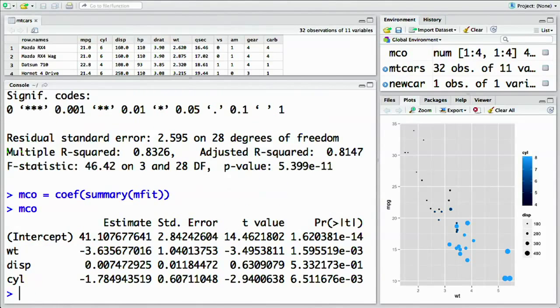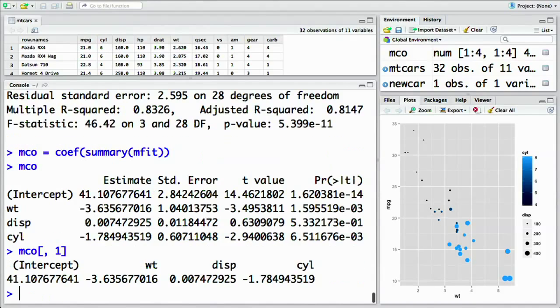Once again, we can extract each of the estimates by getting the first column of this. So mco bracket comma 1, first column. These are our four estimates: how much the marginal effect of increasing your weight, increasing the volume of the engine, or increasing the number of cylinders would affect the miles per gallon.